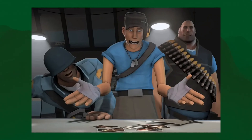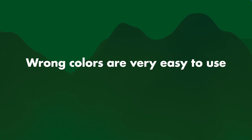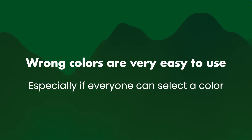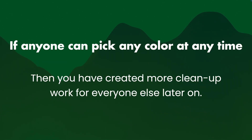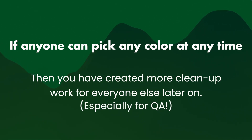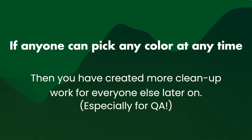Even players kept mentioning, hey, these pants are wrong. It kind of just stuck. So it's very easy to pick a wrong color and just not spot it. Wrong colors are very easy to use, especially if everyone can select a color. If anyone can pick any color at any time, you've created more cleanup work for everyone else later on, especially for QA. They're going to have to dig through so many things and find out: is this actually the right color?